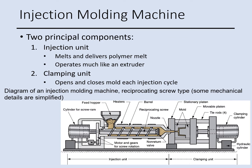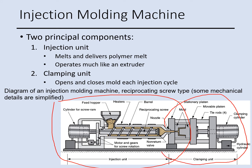An injection molding machine has two main components. The first is called the injection unit, and the second is the clamping unit. The injection unit melts and delivers the polymer melt — it also operates as an extruder, delivering material to the clamping unit.